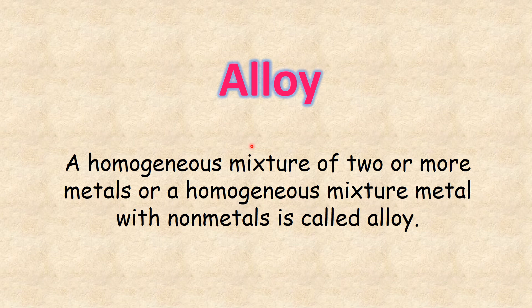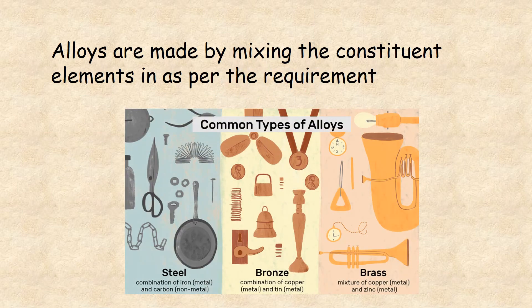Alloy: what is meant by alloy? A homogeneous mixture of two or more metals, or a homogeneous mixture of a metal with a non-metal, is called an alloy. Alloys are made by mixing the constituent elements as per the requirement. Examples include steel, bronze, and brass.